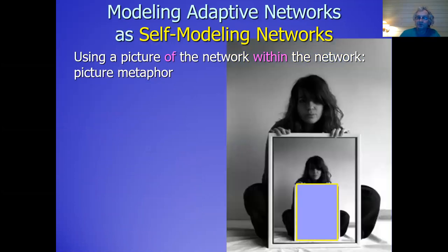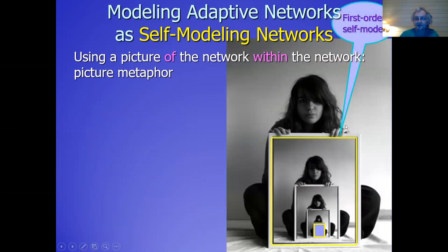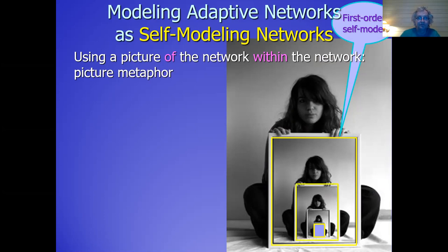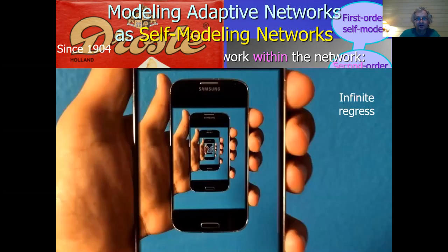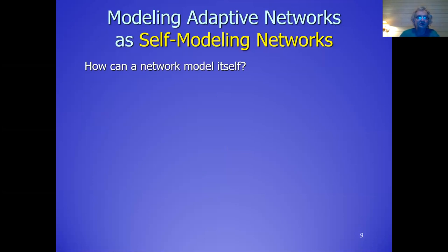Here is another, a bit more clear example. Now you have a picture in the picture, and then you can also continue this whole thing and have a kind of infinite regress. That's also an issue in network self-modeling, because you always need to accept that it is partial. You don't have a self-model of the whole network, because as soon as you add a self-model, that network is already different. But if you accept that it's not a complete description in the self-model, then it's feasible. This is a famous Dutch brand of chocolate and cocoa, and since 1904 they have used this picture — another example where you see this infinite regress.